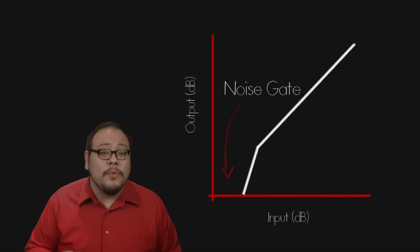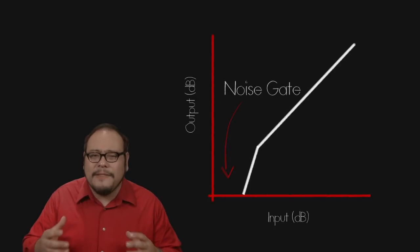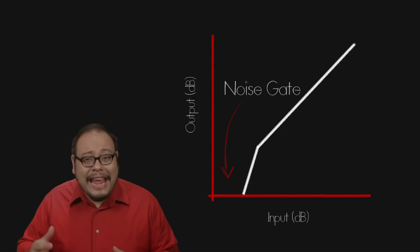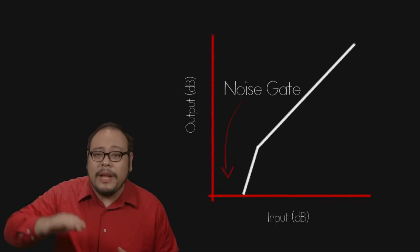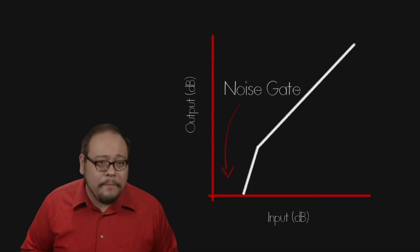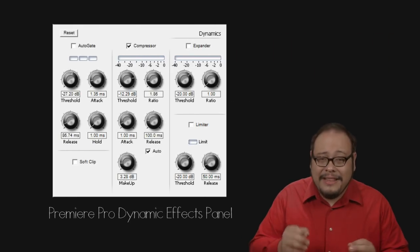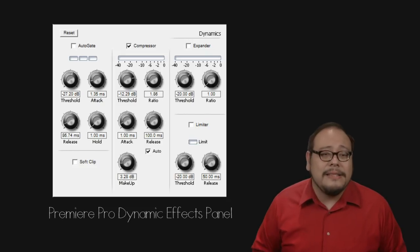A noise gate is one kind of expander. A noise gate essentially is like a high pass filter except for amplitude. Anything louder than a threshold will get through. Anything lower than the threshold will be expanded down into nothing. Attack and release settings are available for expanders as well and they need to be tinkered with to find the best settings.